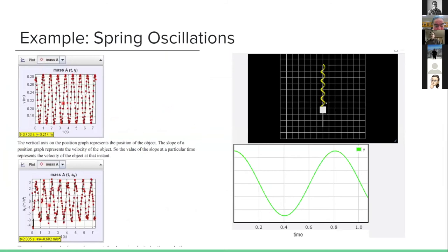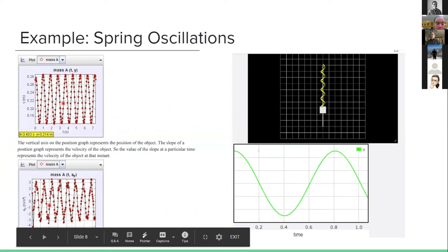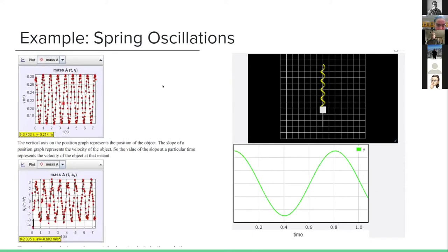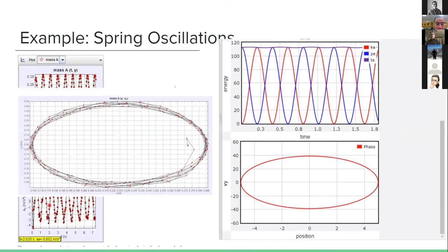A few weeks later we get to spring oscillation: a mass on a spring oscillating up and down. Students get position and acceleration from Tracker and position from VPython, then compare quantities like period and amplitude — going from qualitative to quantitative comparison. One advantage of using the same analysis procedure each week is we can go into more depth without rehashing every step. Students are actually able to do conservation of energy: a kinetic energy, potential energy, and total energy graph from VPython, compared with a similar one from Tracker.